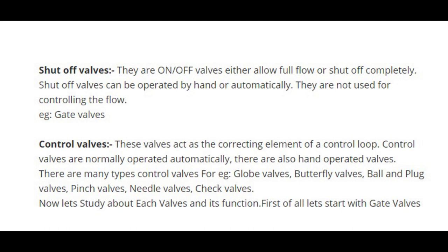Control valves act as the correcting element of a control loop. They are normally operated automatically, though there are also hand-operated versions. There are many types of control valves, for example: globe valves, butterfly valves, ball and plug valves, pinch valves, needle valves, and check valves.